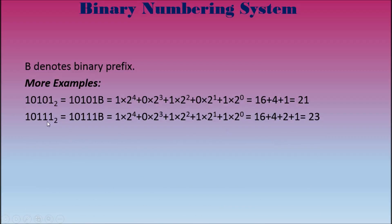Another example: we have 10111 base 2, or 10111 binary. Adding up the columns: 1 times 2 to the power of 4, plus 0 times 2 to the power of 3, plus 1 times 2 to the power of 2, plus 1 times 2 to the power of 1, plus 1 times 2 to the power of 0, which equals 16 plus 4 plus 2 plus 1, giving us 23.